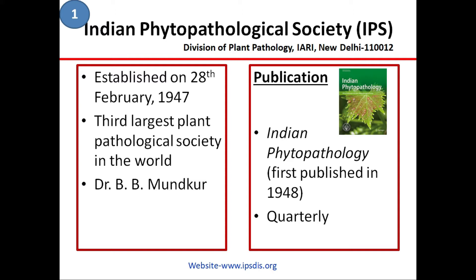This society is now the third largest plant pathological society in the world. The person who was instrumental in establishing the society is Dr. B.B. Munkur. The society has a publication named Indian Phytopathology, with four issues in a year.